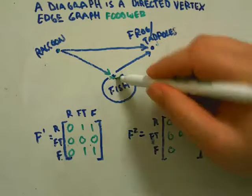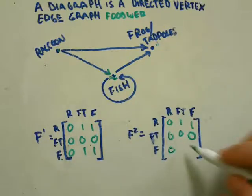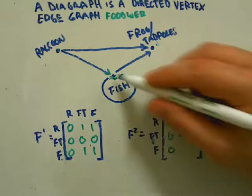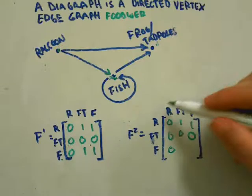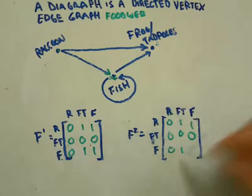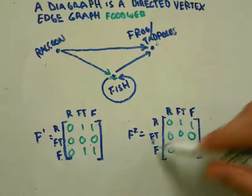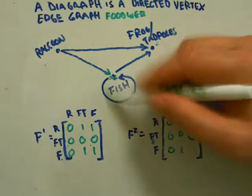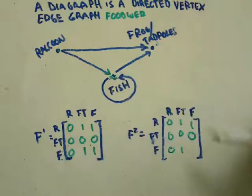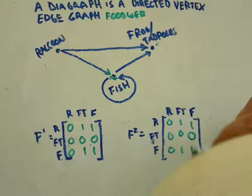and then one more for the second arrow. Since you got to frogs and tadpoles in two arrows, you write that down as one way to get there. For fish to fish, fish makes a double loop, so that's two arrows. You could count that as one.